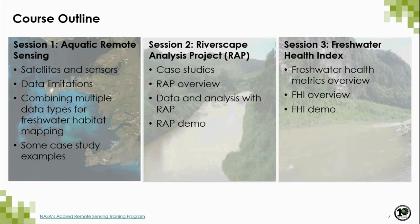Here's an outline of the course. Today, we will go over some basic knowledge on remote sensing for aquatic ecosystems, limitations of remotely sensed data, combining multiple data types, and some case studies using remote sensing for freshwater ecosystems. Next week, we will concentrate on landscape genetics for freshwater ecosystems and talk about the Riverscape Analysis Project. Then on the final session, we will concentrate on the Freshwater Health Index Tool developed by Conservation International.